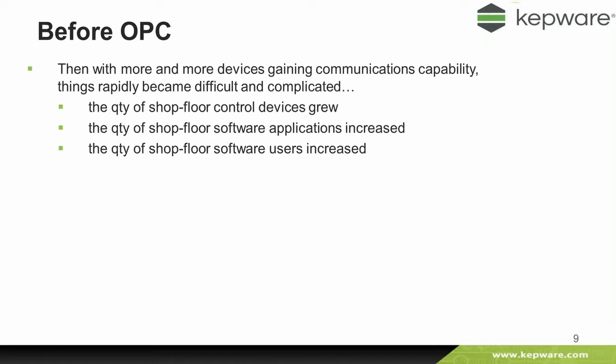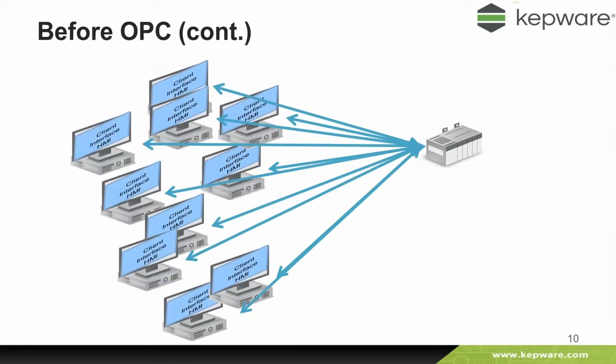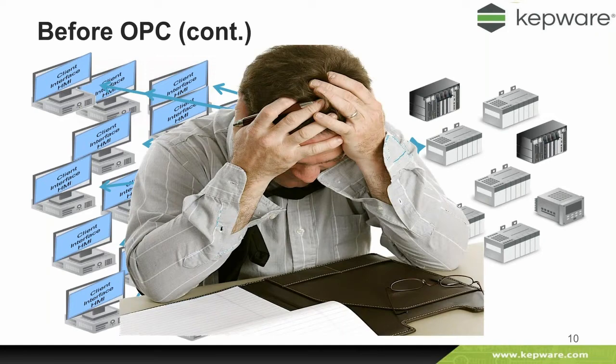The number of devices on the shop floor with communications grew, the quantity of software communicating to those grew, and everything mushroomed very quickly as soon as communications became more widespread in the industrial arena. You'd have one PLC talking to one client application — that's fine — but as soon as you get more applications and more PLCs, you end up with a complete mess of connections, a wild west of anything talking to anything. It became very difficult to manage that sort of level of complexity.